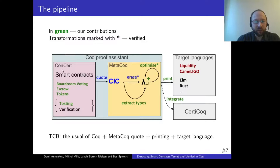We start by defining smart contracts as a function in Coq, which we can then test and verify using ConCert. Afterwards, we obtain a term in the calculus of inductive constructions using metaprogramming facilities in Coq. To this term, we apply the erasure procedure and the extraction procedure for types to obtain a lambda-box representation with additional structures for carrying typing information. We can then apply the optimization procedure to this representation and print it to one of the supported target languages.